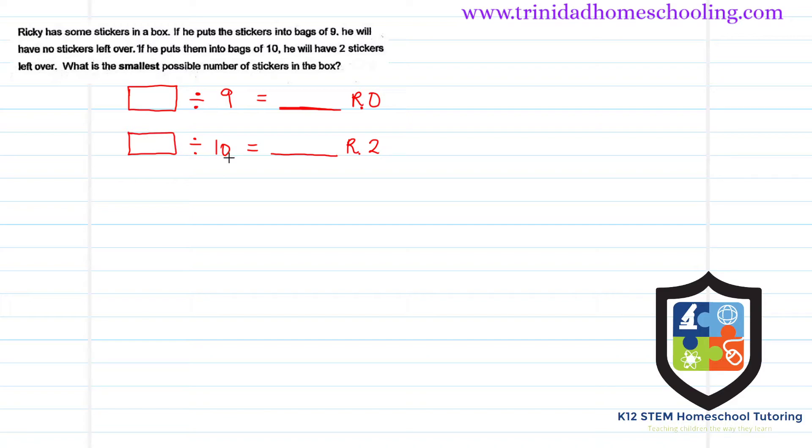We have two stickers remaining that can't fill a bag. Now, if it divides evenly by nine, we know that we are talking about a multiple of nine, or a number that exists in your nine times tables. Now, this nine times table gives a lot of students the most trouble.